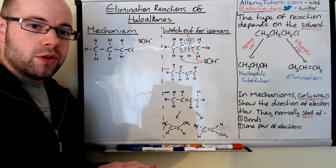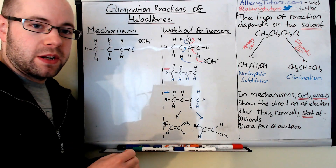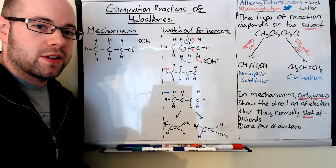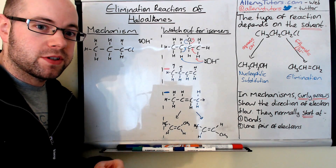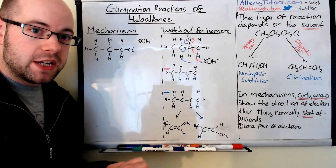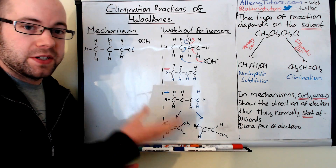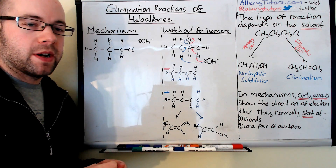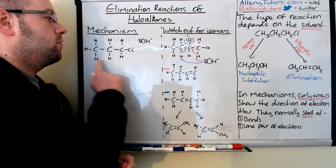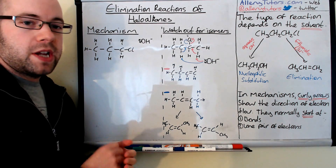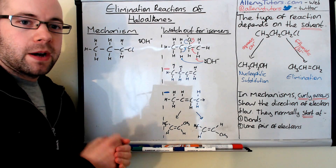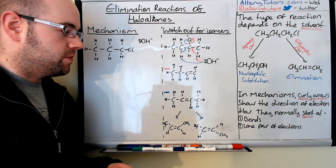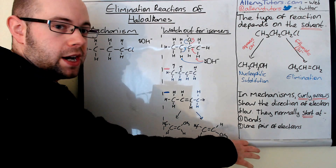We're going to show a mechanism here. The mechanism uses curly arrows, which show the direction of electron transfer. Electrons always originate from bonds or a lone pair of electrons. I've drawn a molecule out — again, this is 1-chloropropane. I have a hydroxide ion, which will be dissolved in ethanol — an ethanolic solution — and we're going to show the mechanism involved. You have to be really careful with which hydrogens it's going to go for.